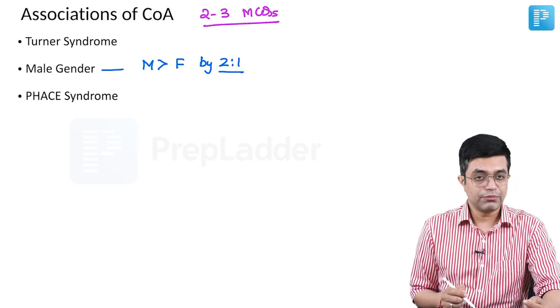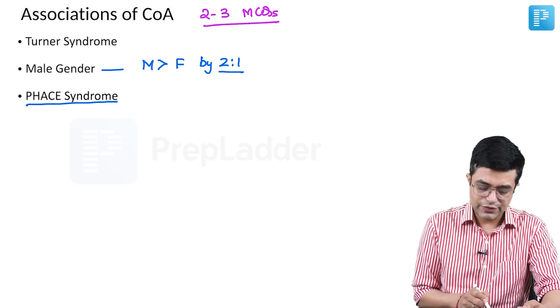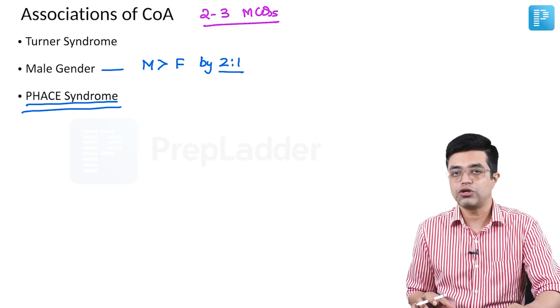Third is PHACE syndrome. If you remember I have talked about neurocutaneous syndromes and PHACE syndrome is one of the places where coarctation of aorta has been known to occur as a part of the syndrome.